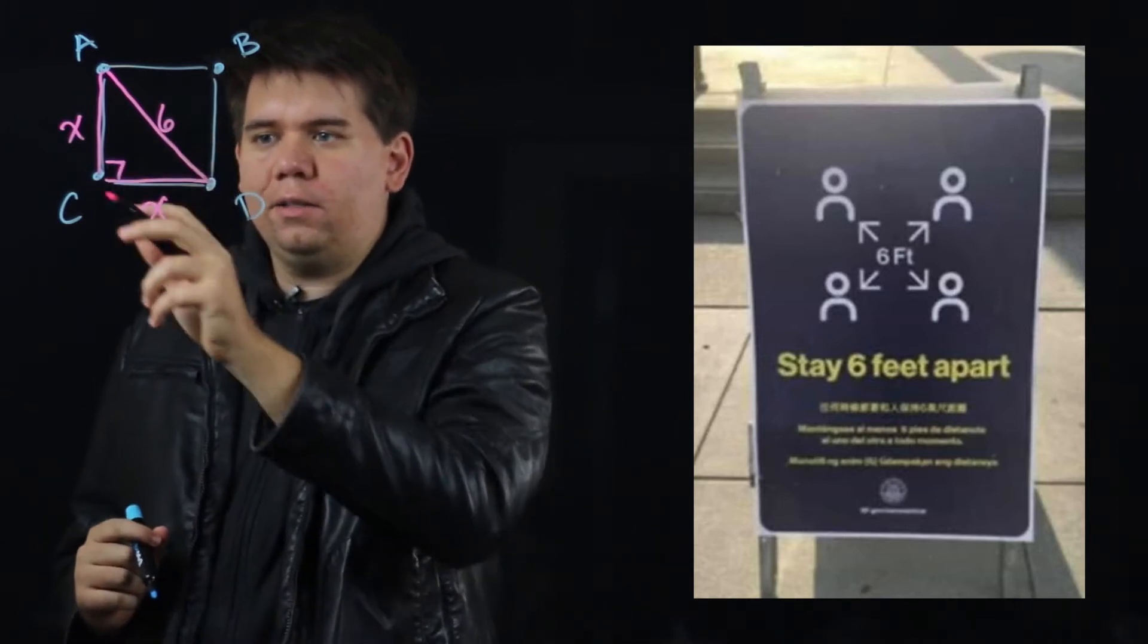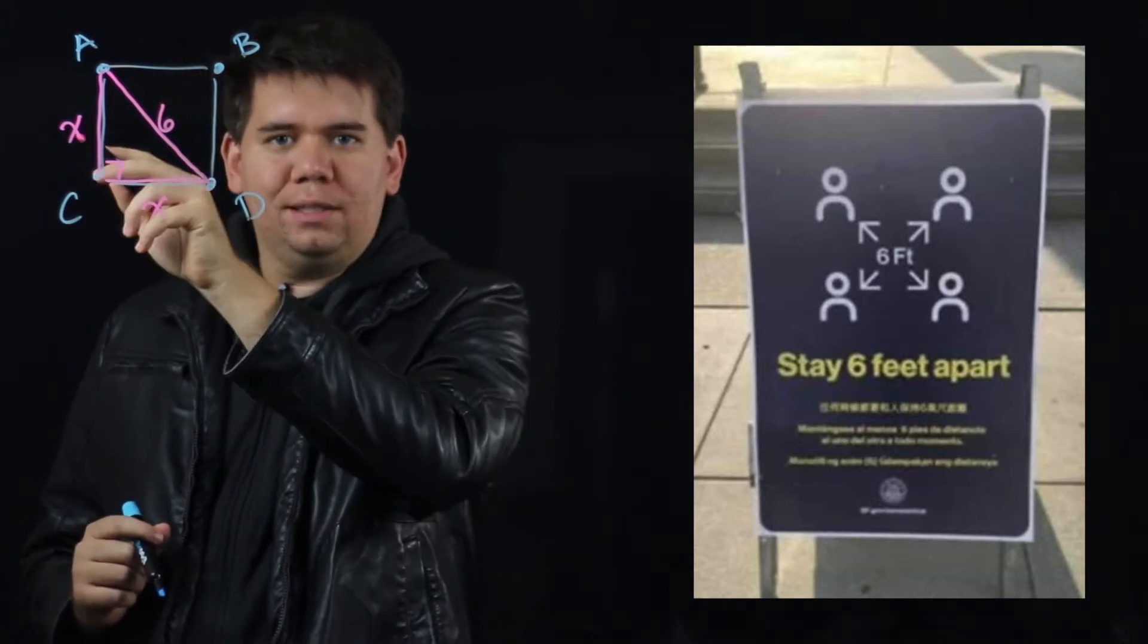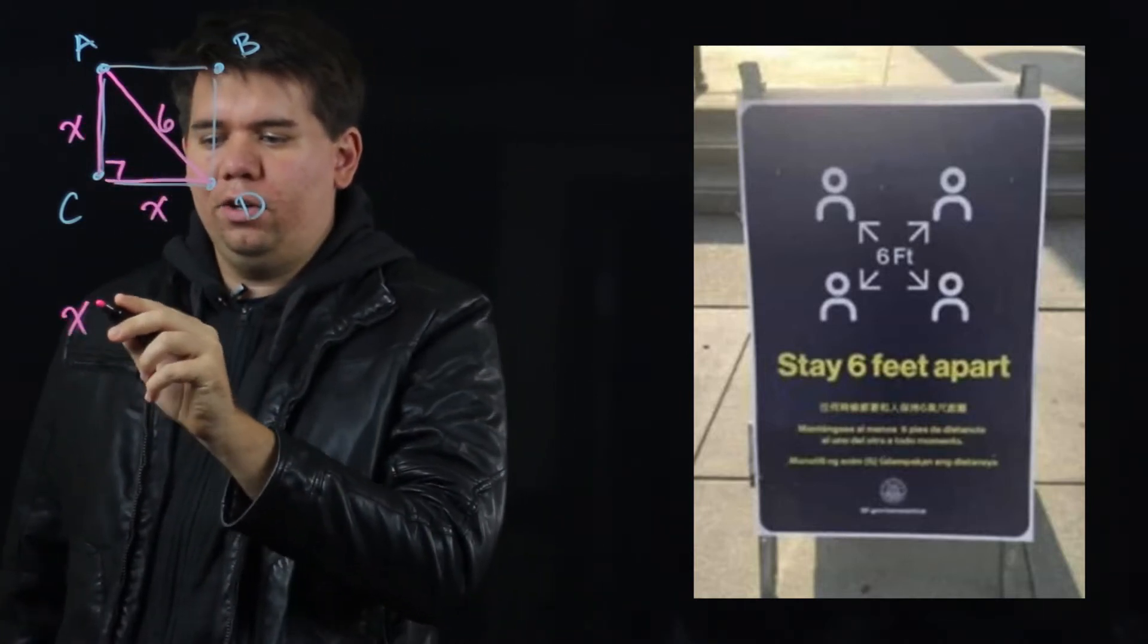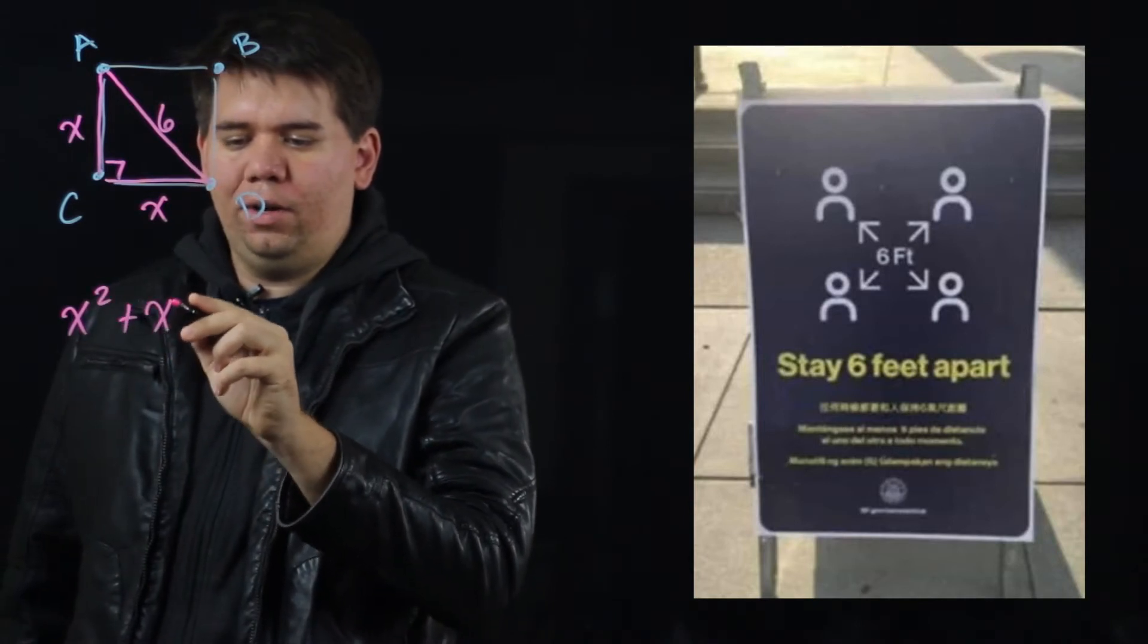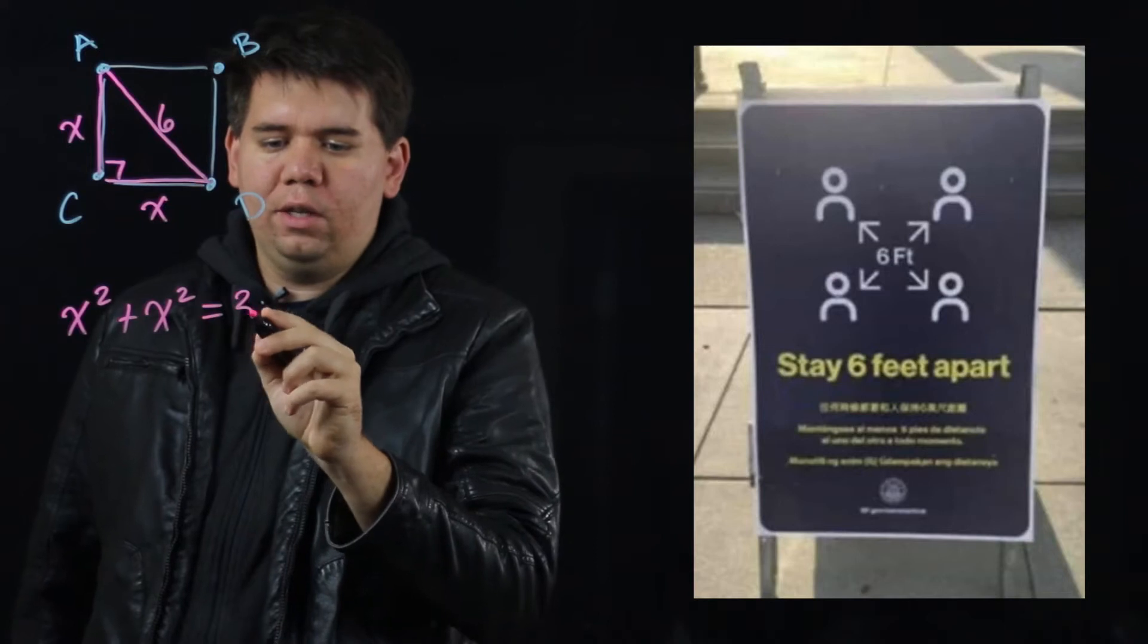And then we could remember what Pythagoras taught us. Pythagoras teaches us in a right triangle, the sum of the squares of the sides is equal to the square of the hypotenuse. That is, your x squared plus your x squared is equal to 6 squared or 36.